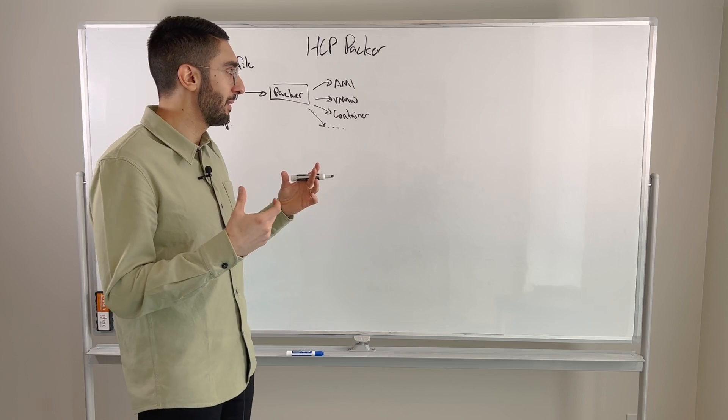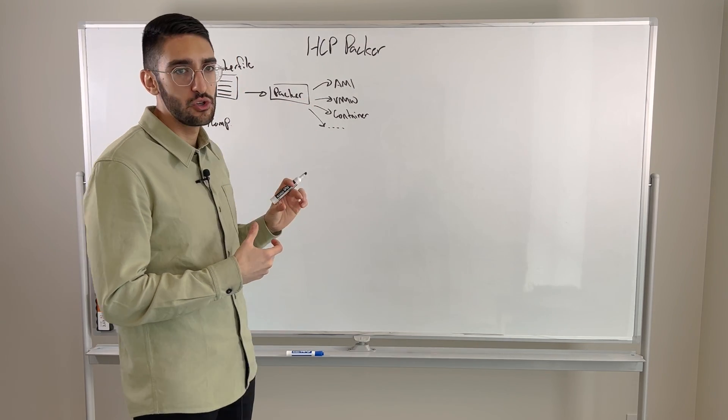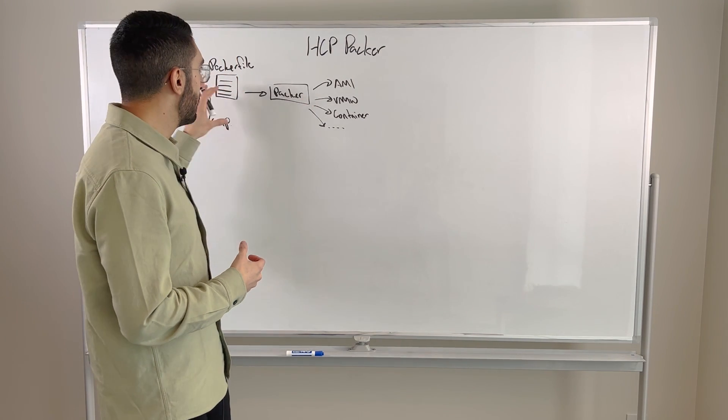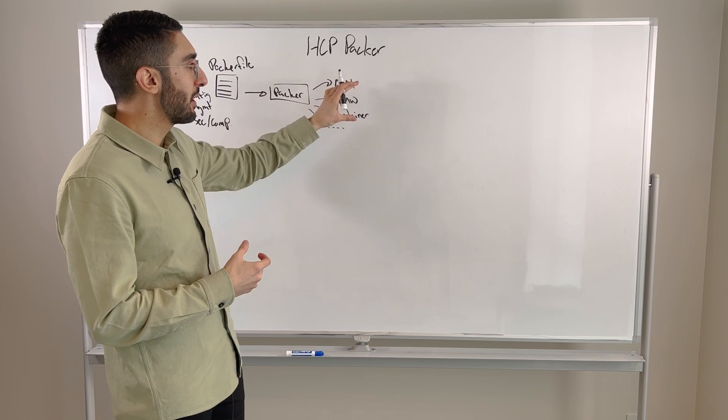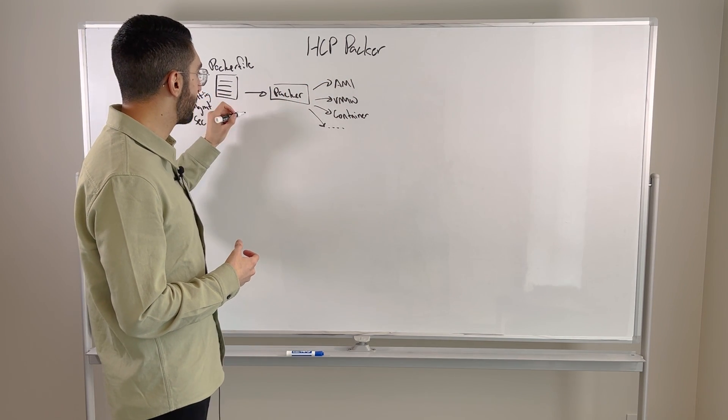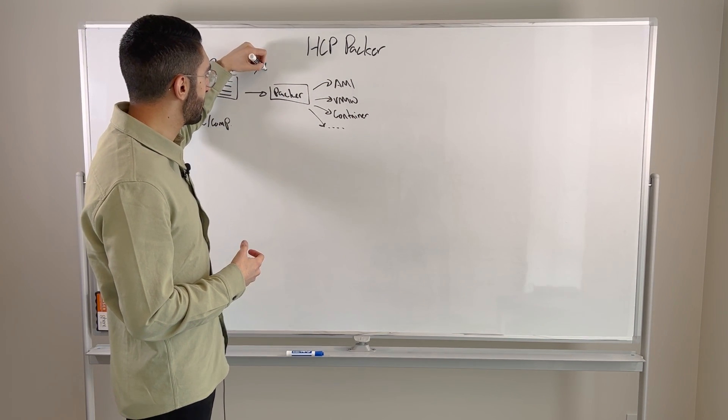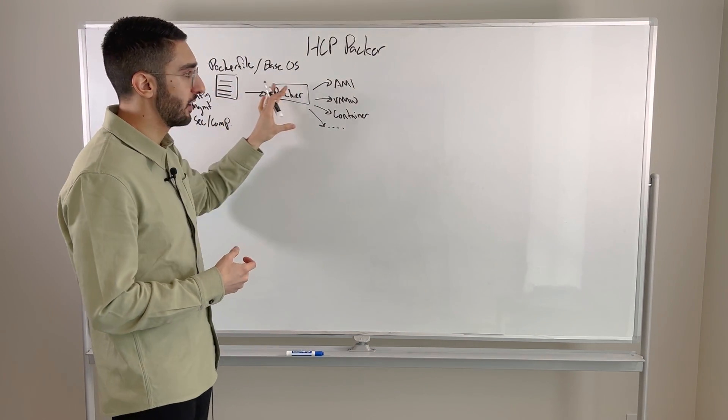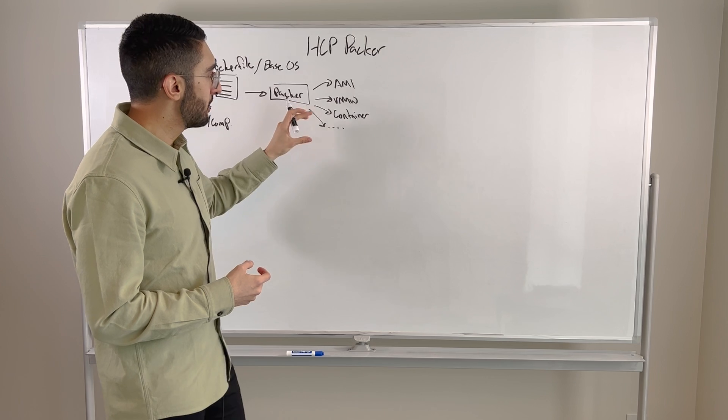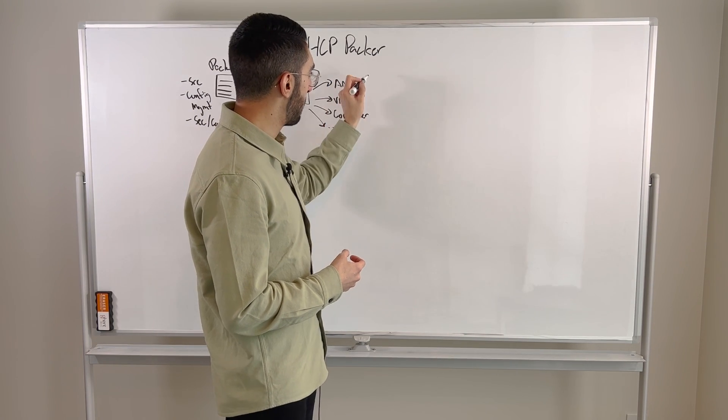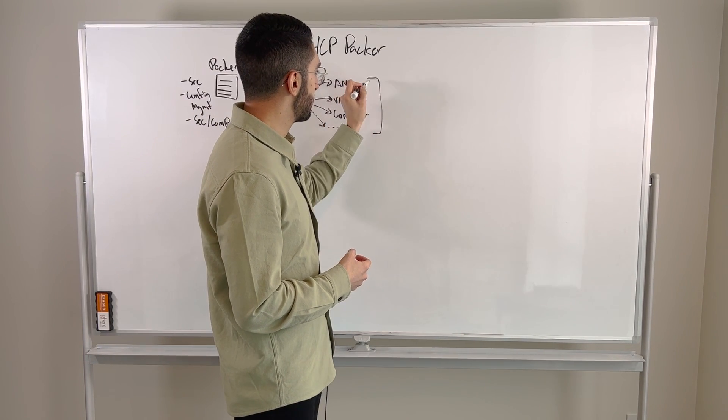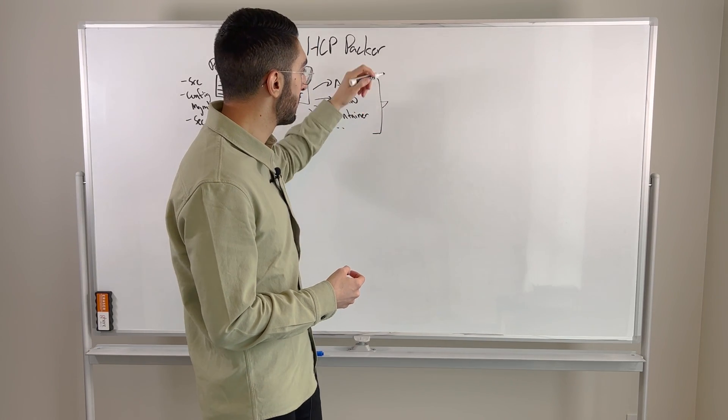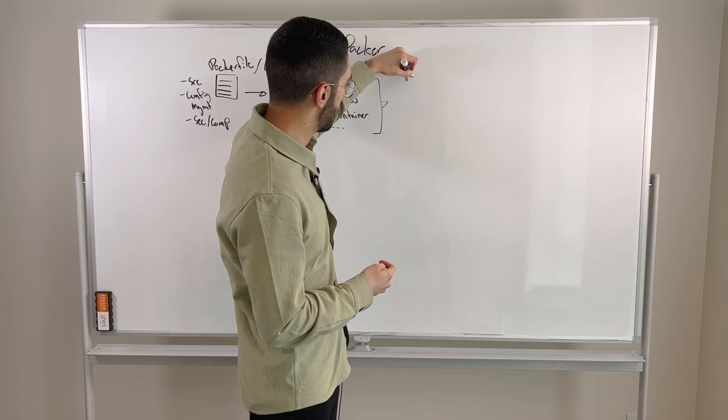Ultimately what we want to be able to do is say, what's the latest version of this artifact? In this case, let's say this pipeline that we're building happens to be for a hardened base OS. So we're creating our base operating system in a hardened way. Where HCP Packer comes in is at the end of this pipeline, all of these outputs, this metadata, gets published into the Packer registry.